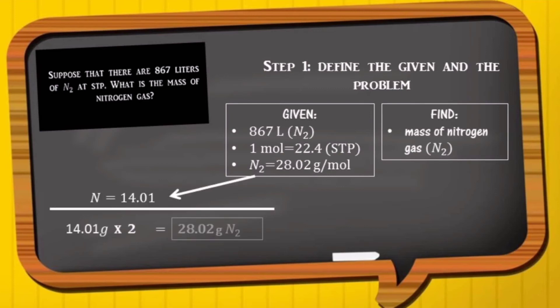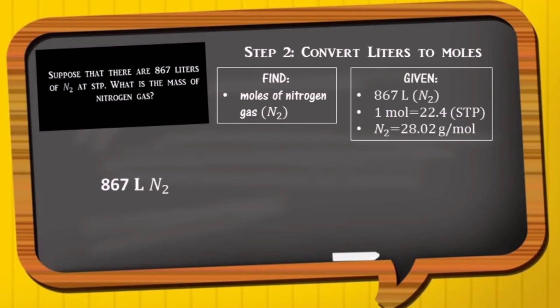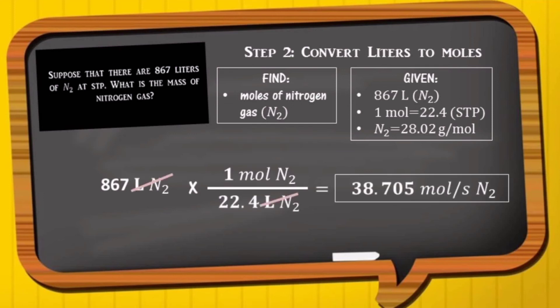So we start by determining the number of moles of gas present. We know that 22.4 liters of gas at standard temperature and pressure equals 1 mole. So 867 liters times 1 mole divided by 22.4 liters equals 38.705 moles.